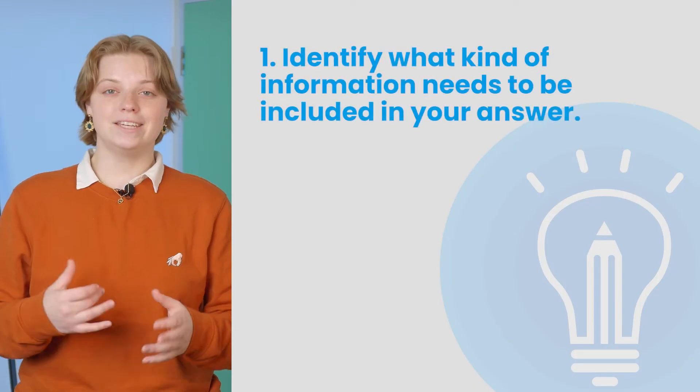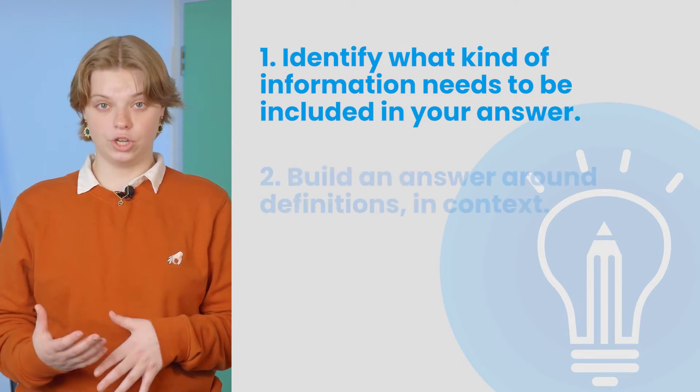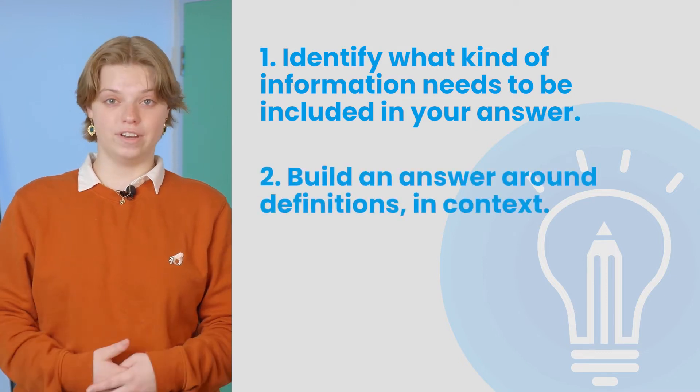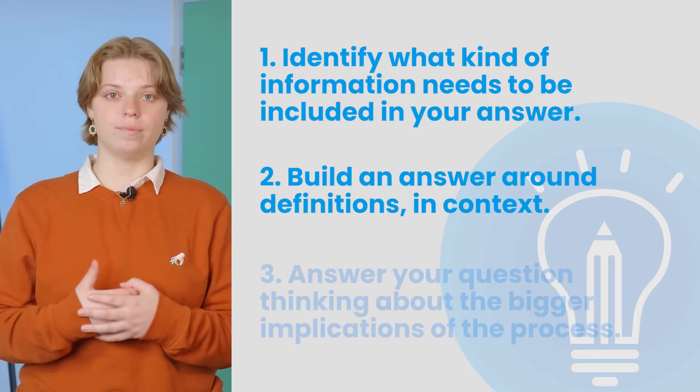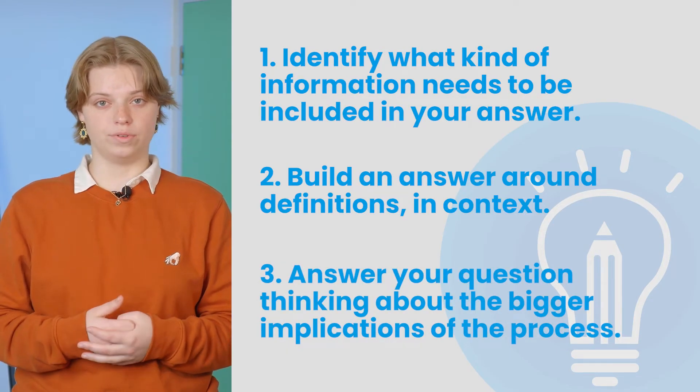Have a look at these next steps. Number one: identify what kind of information needs to be included in your answer. Number two: build an answer around definitions in context. And number three: answer your question thinking about the bigger implications of the process. To really ace this, you're going to need a bunch of information at your fingertips regarding definitions and the flow of how biological processes tend to work. Have a look at the study time walkthrough guides and checklists to make sure you're armed with all the knowledge you need to write an excellent answer.